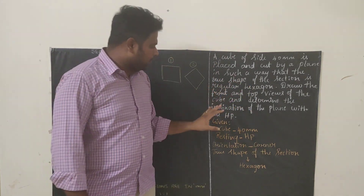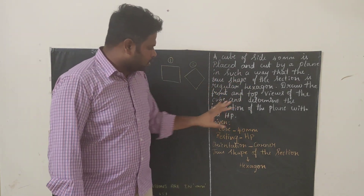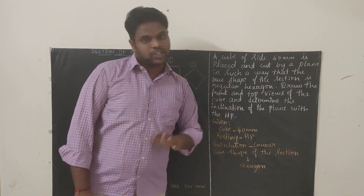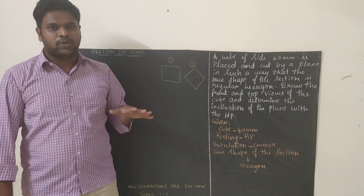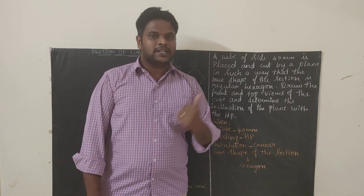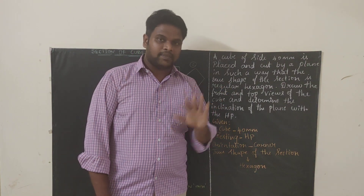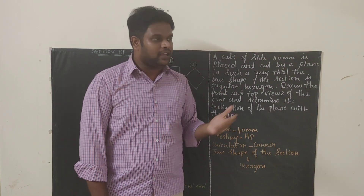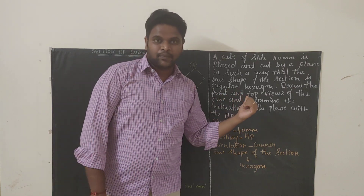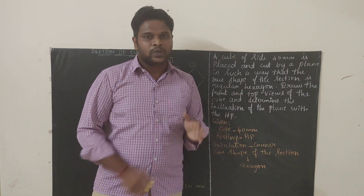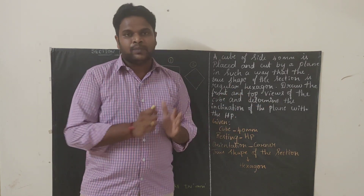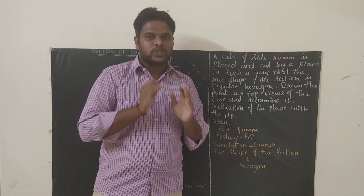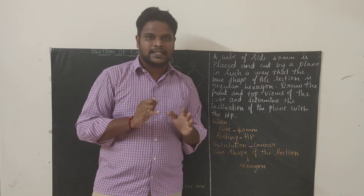Draw the front view, top view, and determine the inclination of the cutting plane with the HP. They haven't given any hint regarding the cutting plane, so it is a special type problem. We have to deal with the problem in such a way that we cut the cube so that the true shape should be a hexagon.